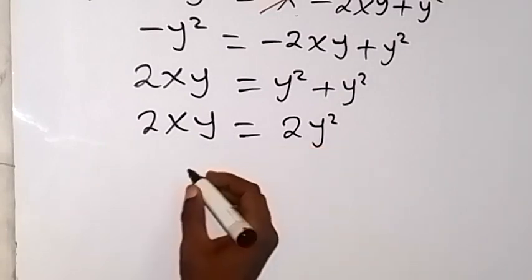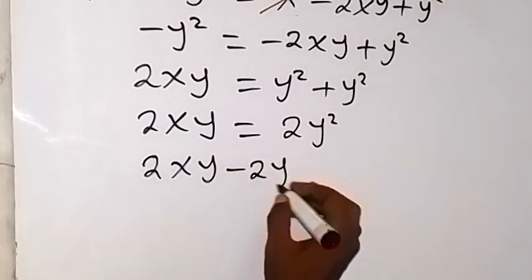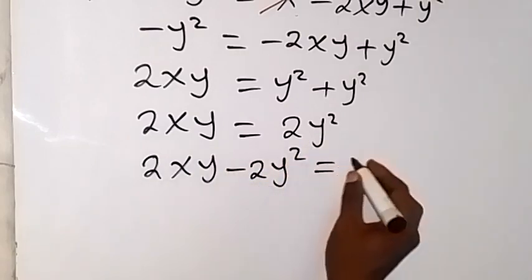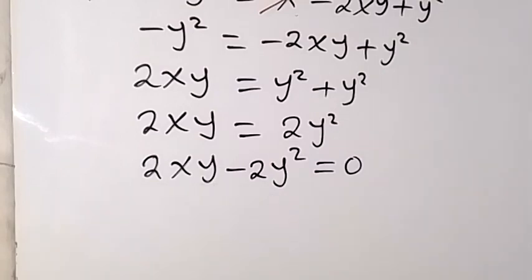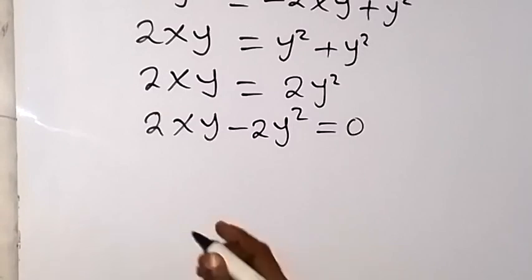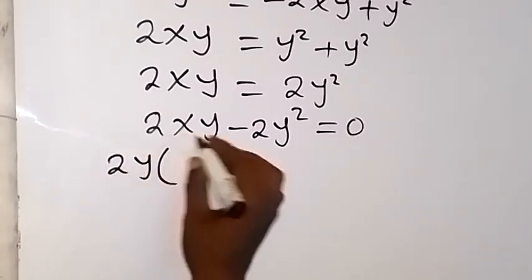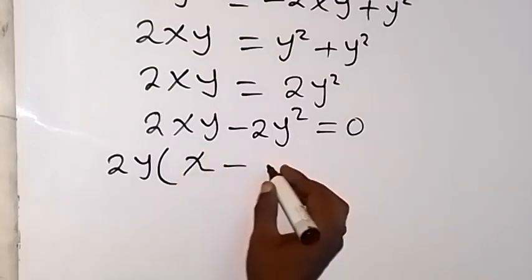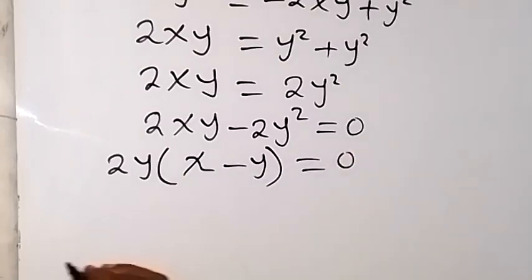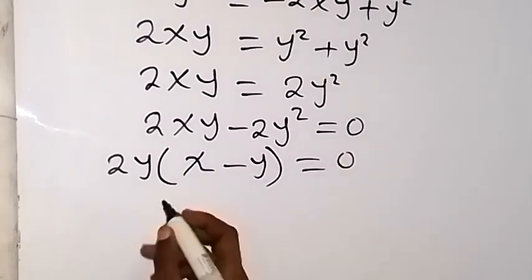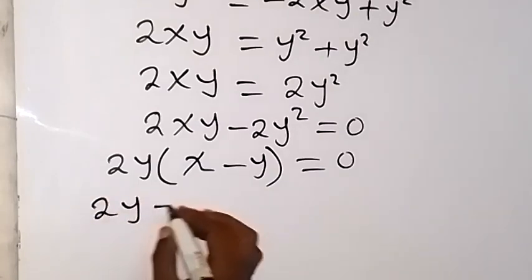We can bring everything to one side so that we have 2xy minus 2y squared equals 0. We can factor 2y out from here, giving us 2y times (x minus y) equals 0.